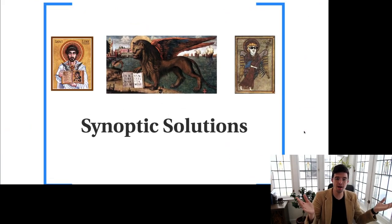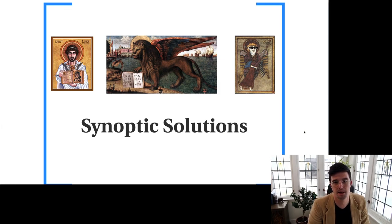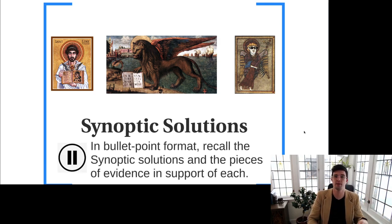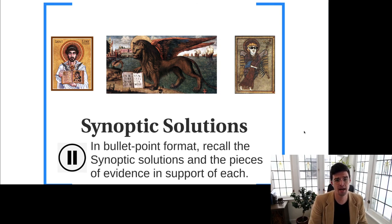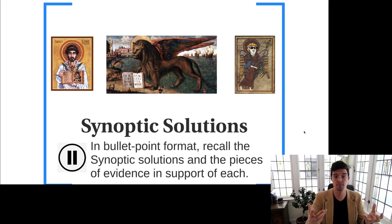So all of this is to say there are two main solutions to the synoptic problem: the two-document hypothesis and the Farrer theory. To conclude the video, take a lecture pause and in bullet point format, list the two main solutions to the synoptic problem and some of the pieces of evidence in support of each that have been presented here. What you're doing in this lecture pause is a recap in bullet point format.